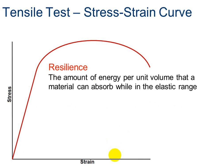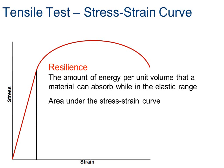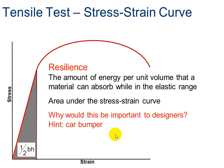Let's talk about resilience. Resilience is the amount of energy per unit of volume that a material can absorb while in the elastic range. It's the area under the stress-strain curve in that region — notice that this area makes a triangle shape, so we find it using half the base times the height. Why would it be important for car designers to understand resilience? Because we want a high resilience in a car bumper so it can absorb energy.